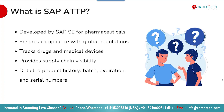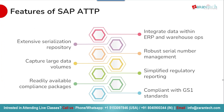This level of tracking is critical for the pharmaceutical industry. SAP ATTP comes with a robust set of features to meet the complex needs of pharmaceutical supply chains. First, it integrates data within the company's ERP system and warehouse operations. Second, it provides robust serial number management to track individual products. Third, it simplifies regulatory reporting to maintain compliance. Fourth, it is fully compliant with GS1 global standards. Fifth, it has an extensive serialization repository to store large volumes of serial numbers and related data. Finally, it includes readily available compliance packages for different countries and regulations to make deployment faster and easier.